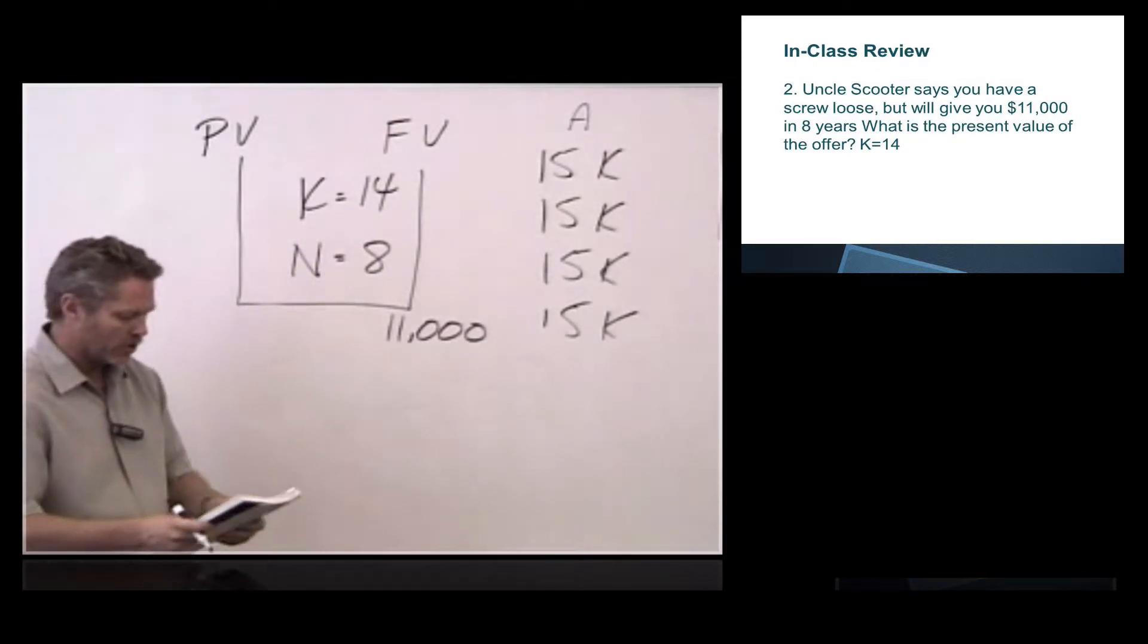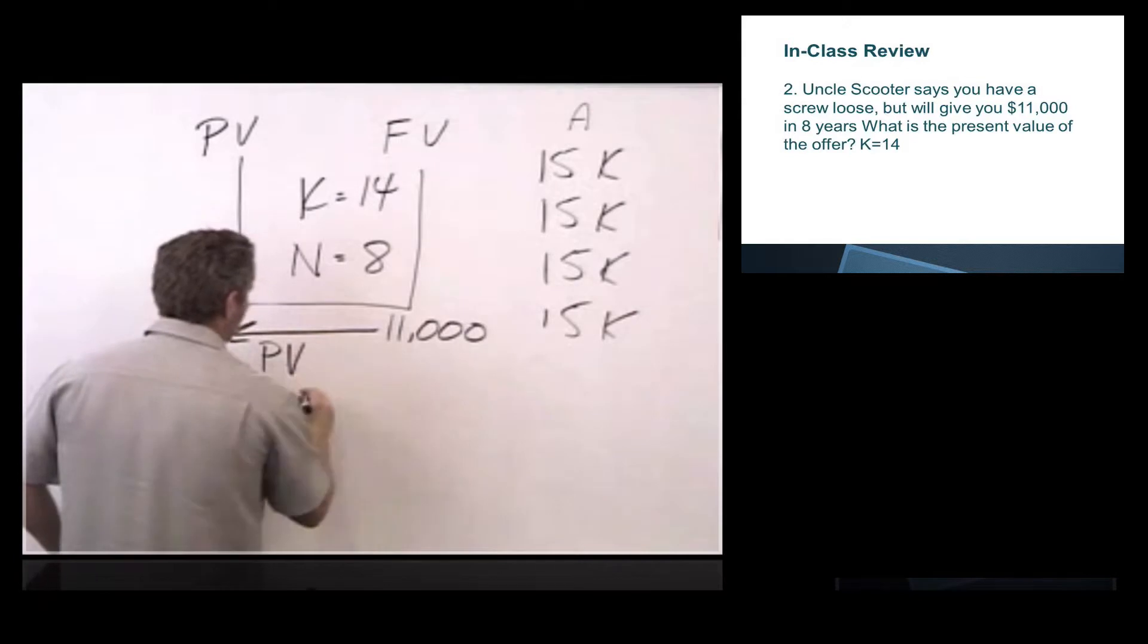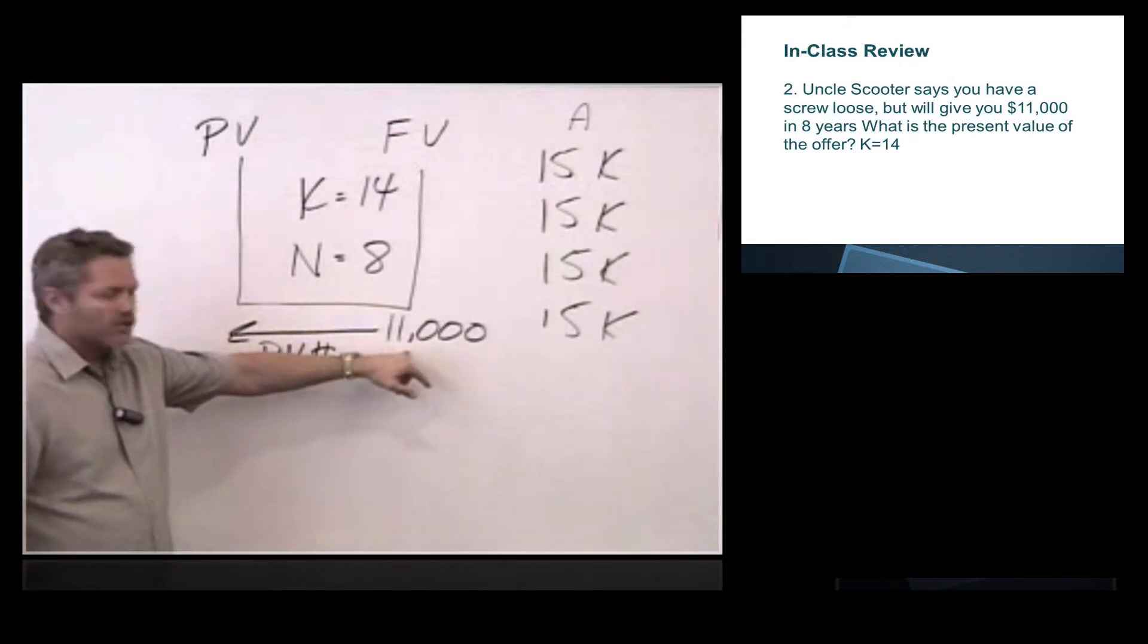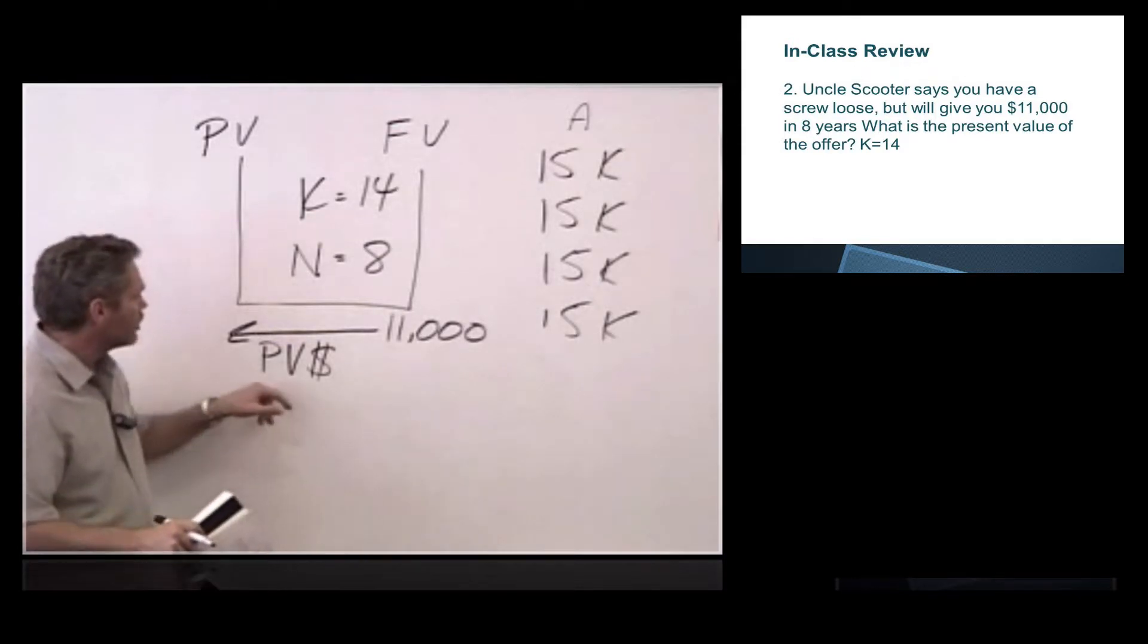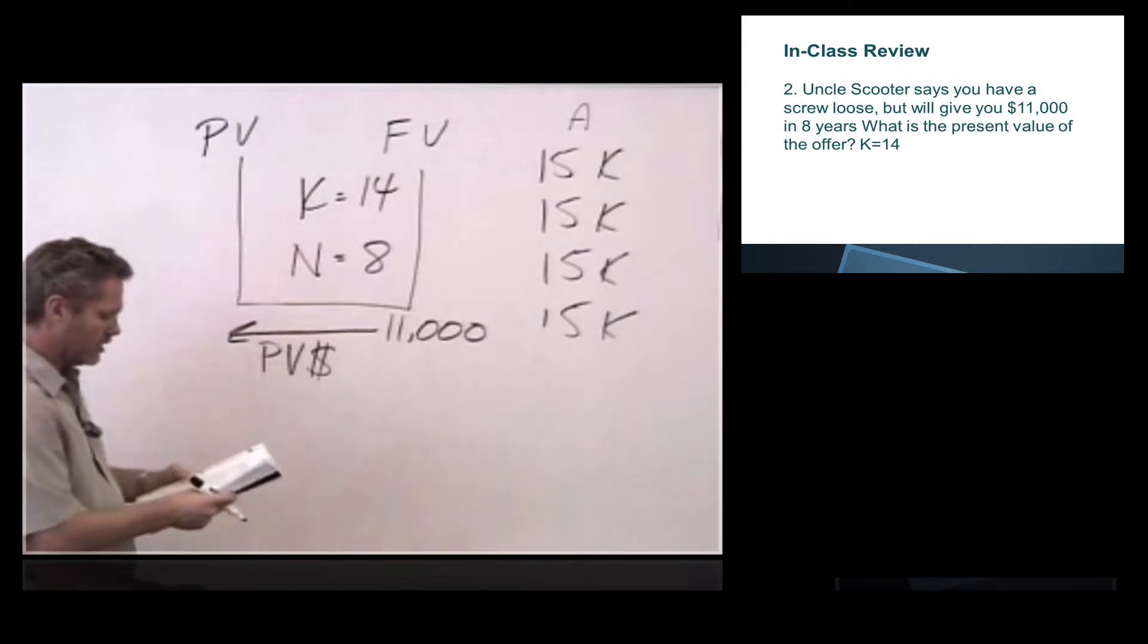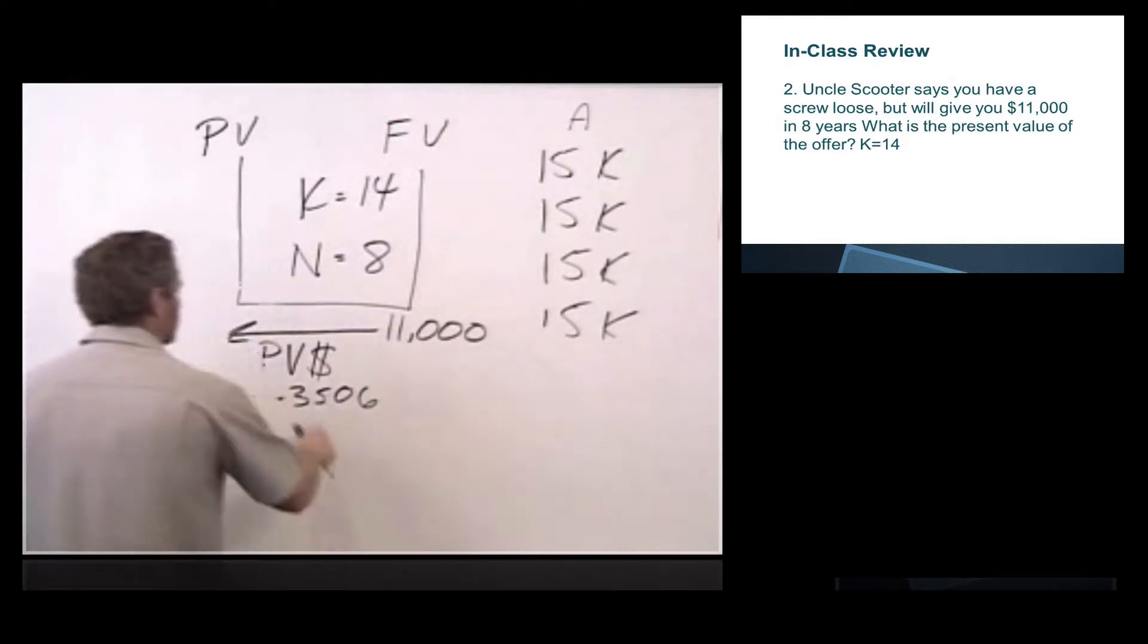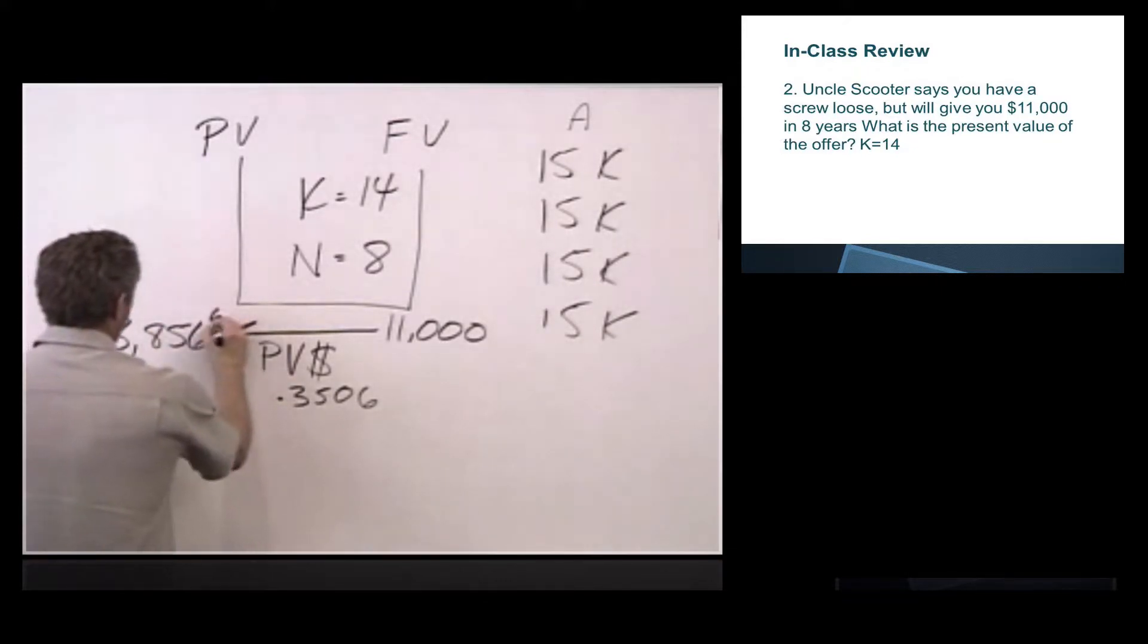What is the present value of the offer? So we are going to discount this back using present value of a dollar. If he was going to give us $11,000 each year, and I wanted to know what it was worth, I'd be using present value of an annuity, but he's not, he's just giving us one payment. So we look up present value of a dollar, slide across the top, K equals 14, down N equals 8. We get a factor of .3506, multiply that by 11,000, and we get a present value of $3,856.60.